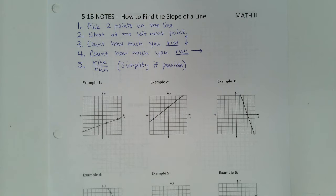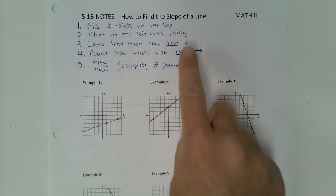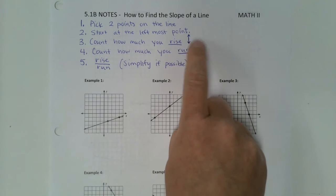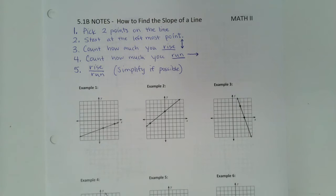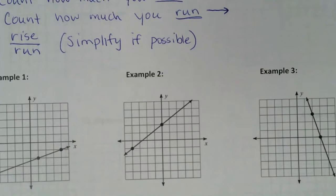I always want you to always start on the left because that will make this part easier for you. Trust me on that. I think we're going to start with example two because that one's got more spaced out points. So I'm going to zoom in. All right, so we're following our steps. Step one says pick two points on the line.